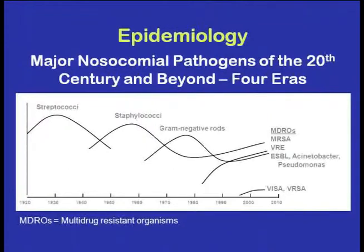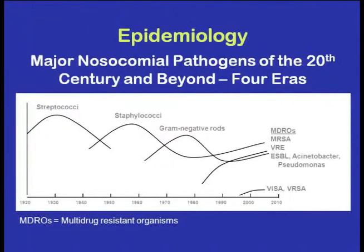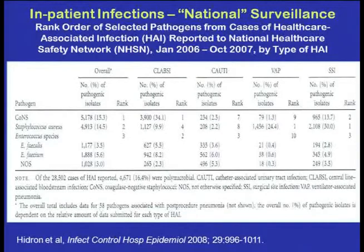There have been four eras in hospital-acquired infections. At the turn of the century, group A streptococci were major problems. In the 40s and 50s, staphylococci became a problem — there were pandemic diseases due to staphylococci in hospitals. In the 70s and 80s, with more aggressive chemotherapy, gram-negative infections emerged and Pseudomonas aeruginosa became the quintessential nosocomial bug. In the last 10 to 15 years, multidrug-resistant organisms have risen: coagulase-negative staphylococci, MRSA, VRE, vancomycin-resistant enterococci, extended-spectrum beta-lactamases, and in ICUs, Acinetobacter, Pseudomonas, and vancomycin-resistant Staph aureus.